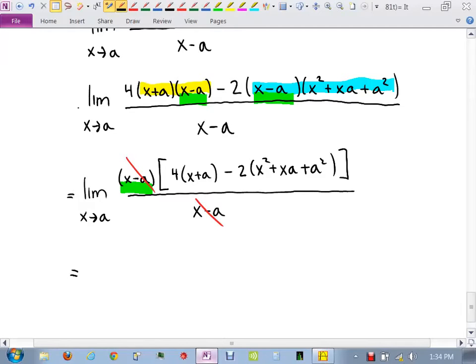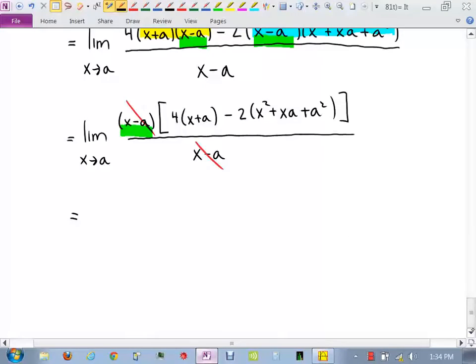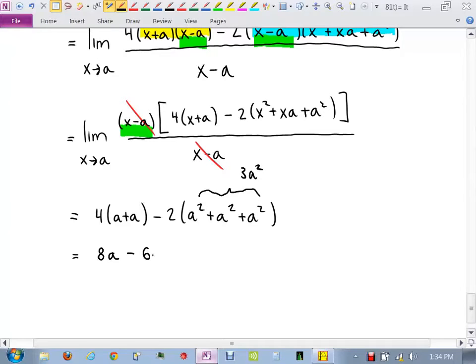So here it is. I'm real bad about leaving all my equal signs off. I apologize. I should have equals in front of all this. All right. So now what am I going to do to take this limit? Plug in a for all my x's, right? So I'll have 4 of a plus a minus 2 a squared plus a squared again plus a squared again. Which is 4 a. Sorry, that's not 4 a squared. That's 2 a. So how about 8 a? A plus a is 2 a and then times 4. So 8 a minus, let's see, these three together gives me 3 a squareds and then times negative 2. So negative 6 a squared. That's the slope of the tangent line at a.